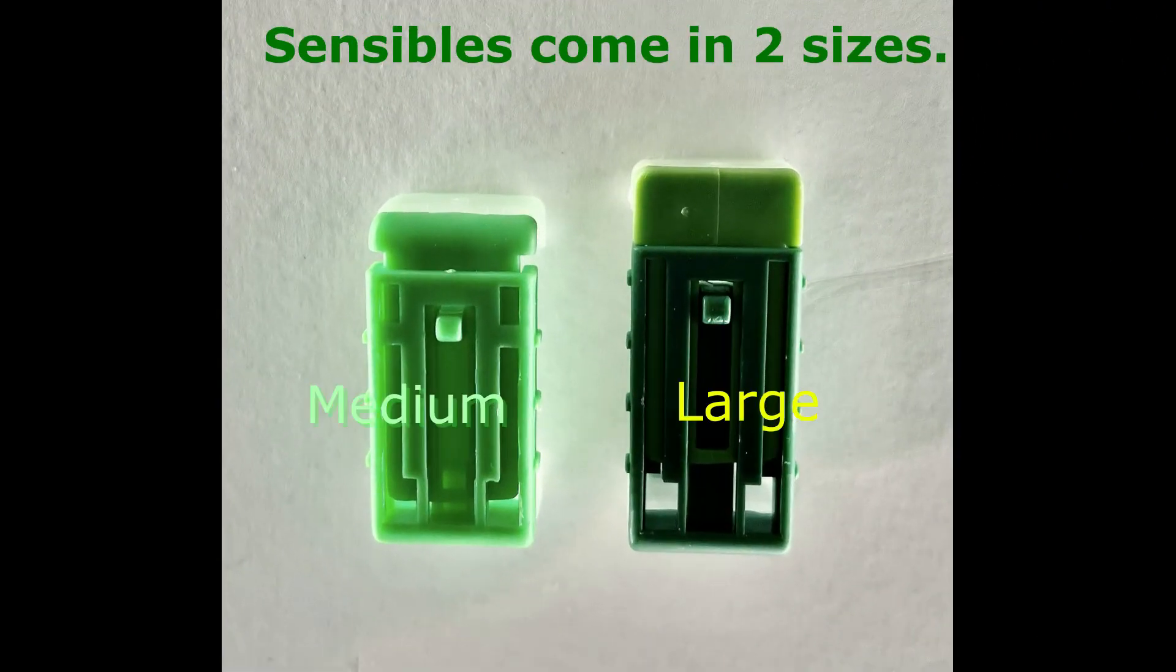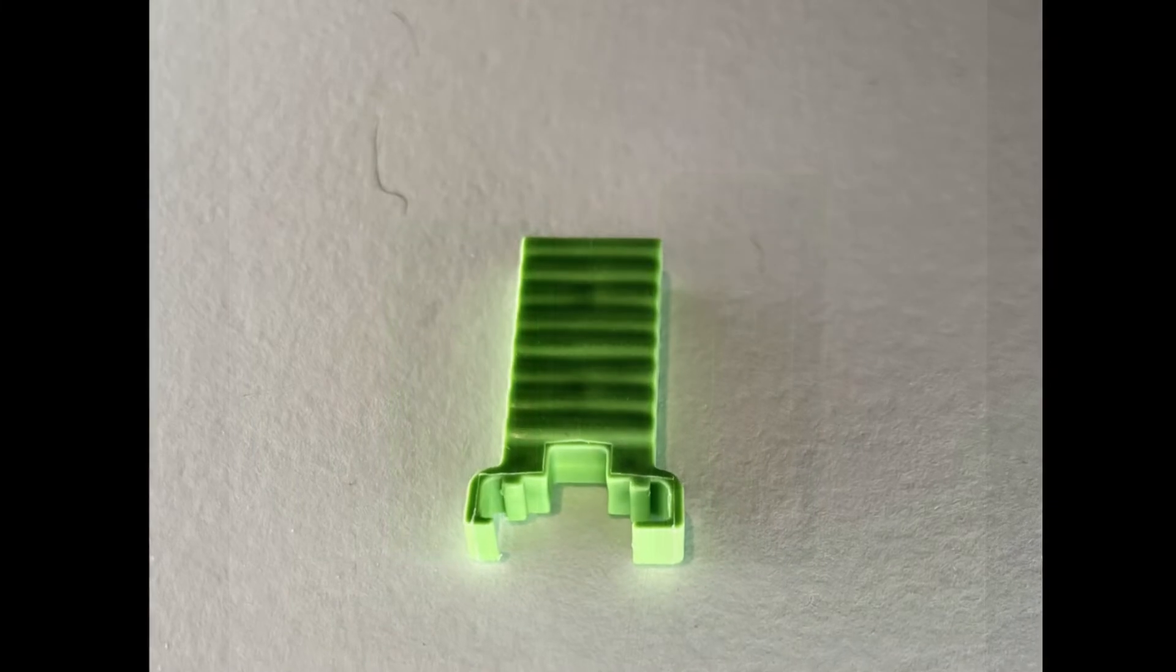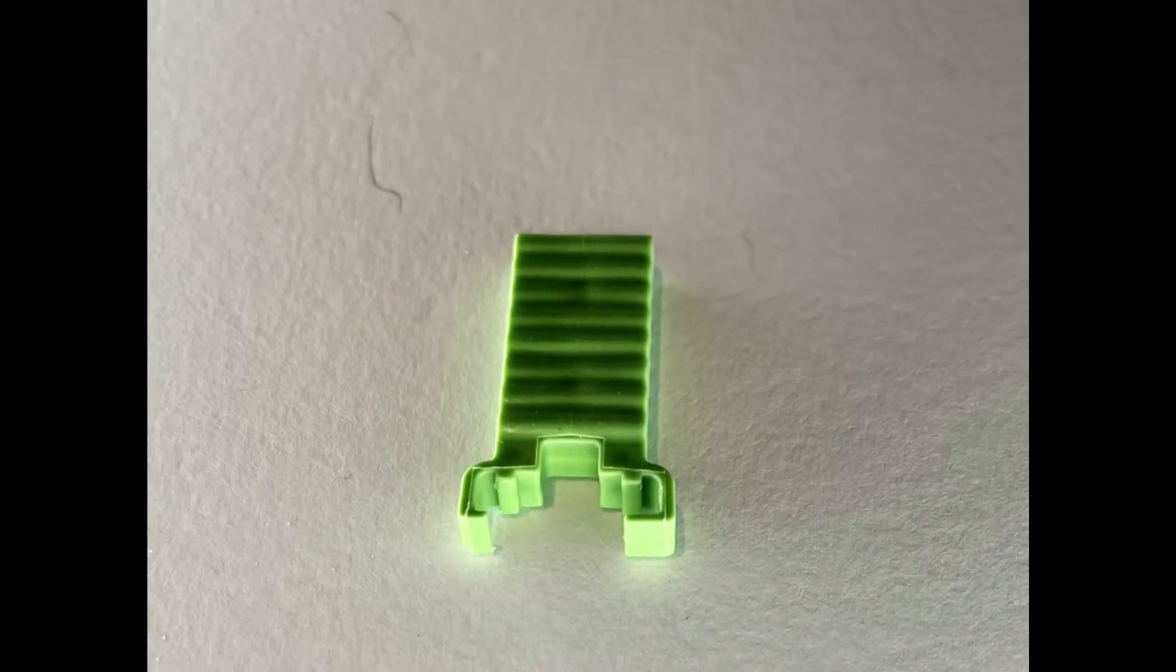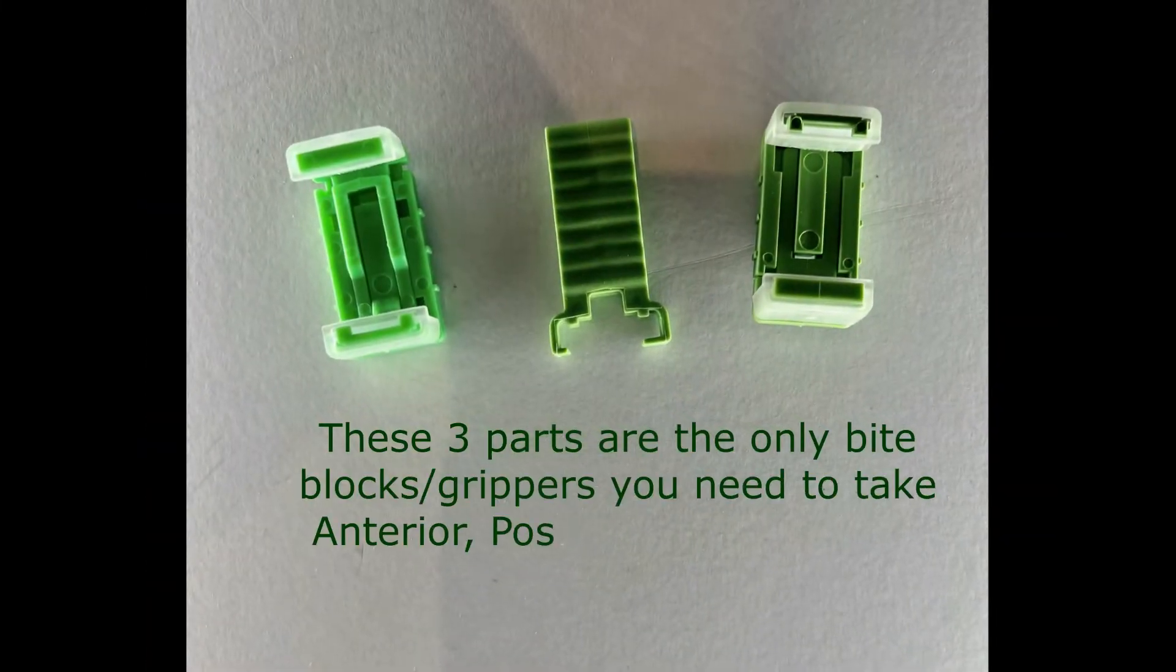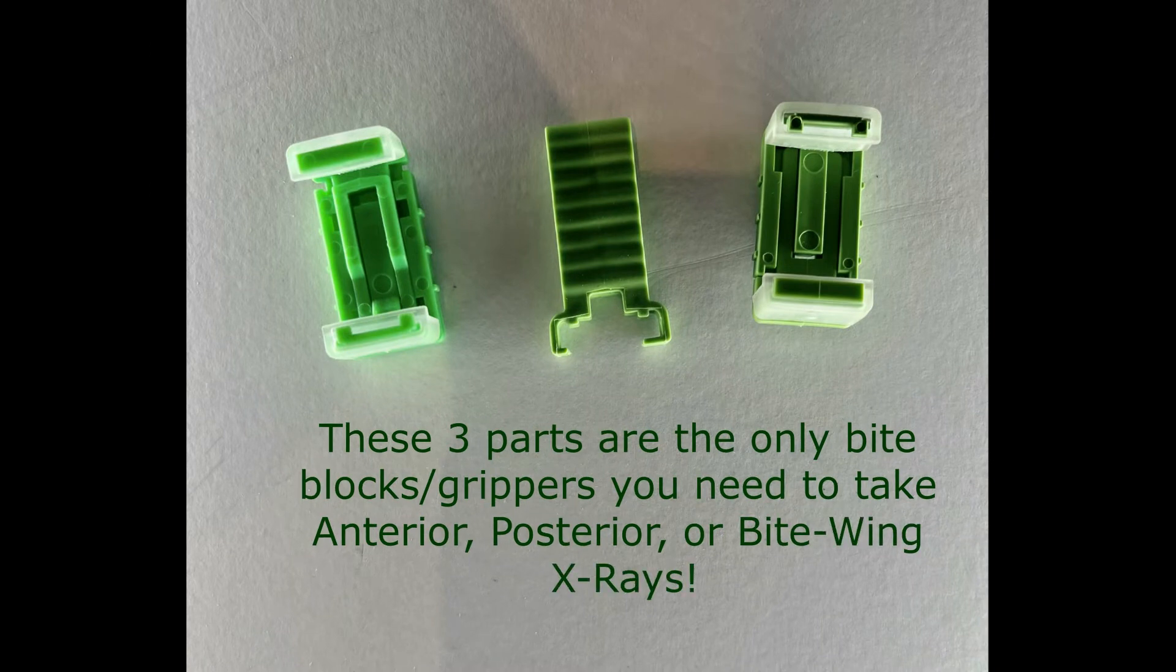To summarize, Sensibles come in two sizes, color-coded medium and large grippers. These are used with our universal bite block, and these three parts are all you need to take an anterior, posterior, or even a bite wing x-ray.